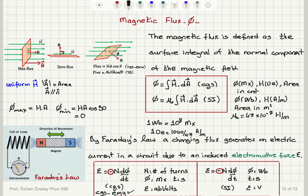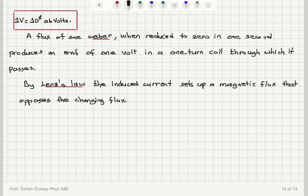The minus sign in Faraday's law comes from Lenz's law. If you have an increase in flux, the induced current will produce a flux opposing the change — inducing a flux in the opposite direction. That is what gives us the minus sign in the statement of Faraday's law.